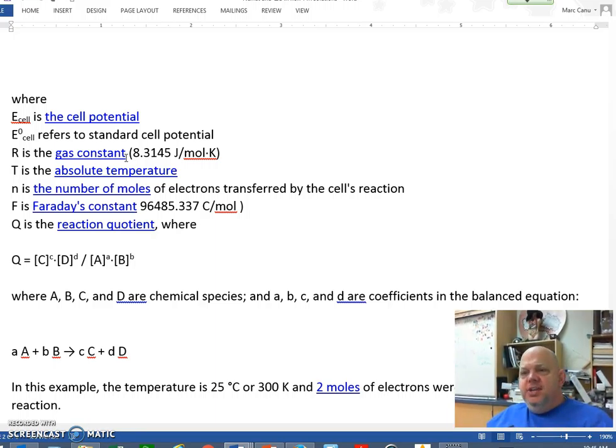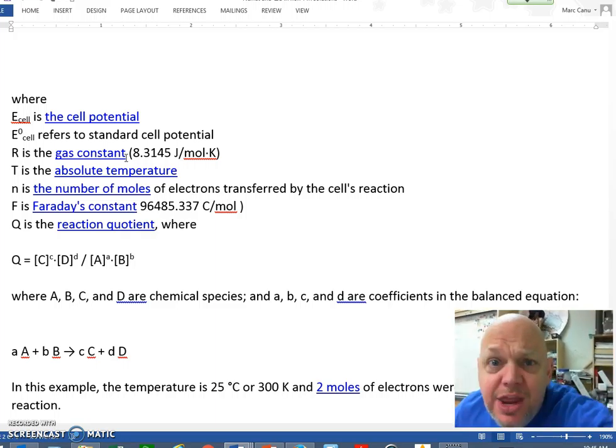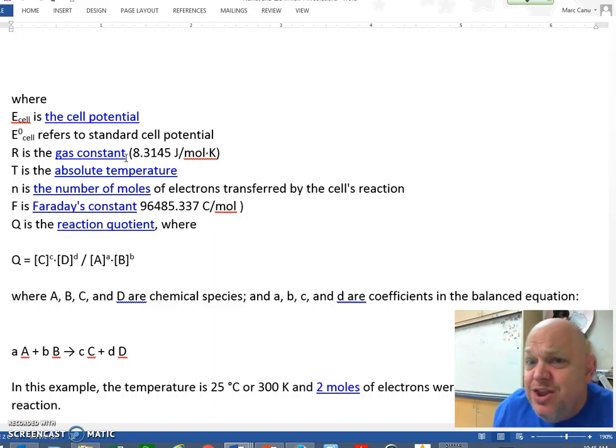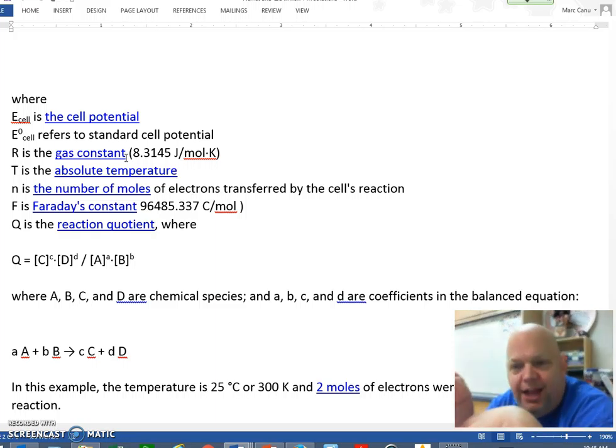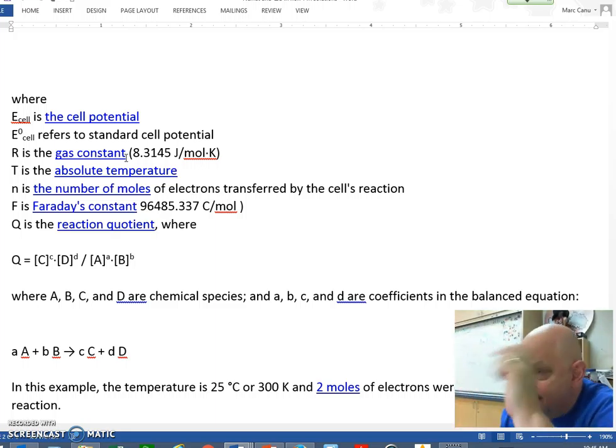N is the number of moles of electrons that transferred by the cell's reaction, which in this case was 2. You can go back and look at the equation, you'll notice there are 2 moles of electrons. Now F is Faraday's constant, how many coulombs there are of charge in 1 mole of electrons. And then Q is the reaction quotient. You thought you were going to escape it. You didn't!